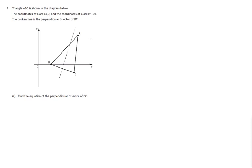In this question we have a triangle ABC. We're told the coordinates of B and C are (3, 0) and (9, -2). And we're told that this broken line is a perpendicular bisector - perpendicular, it's at right angles to BC.